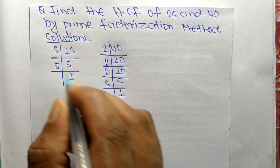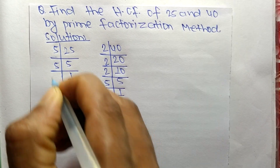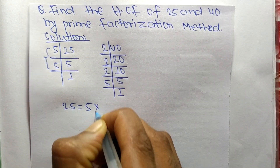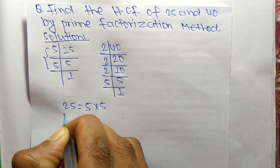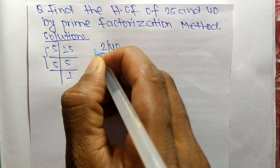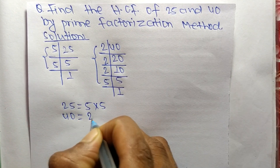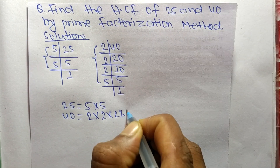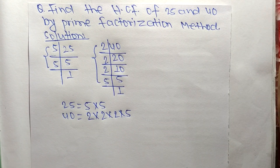From these prime factors we can write: 25 is equal to 5 times 5, and 40 is equal to 2 times 2 times 2 times 5. Now we find out the common factors in the prime factors of 25 and 40.